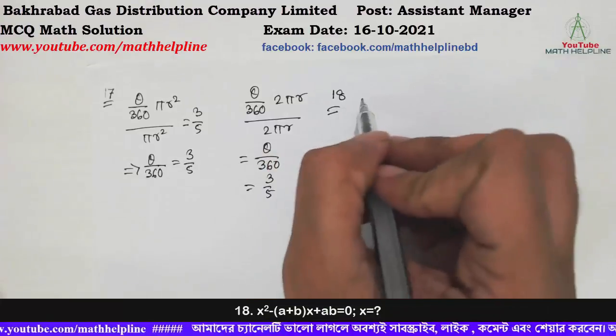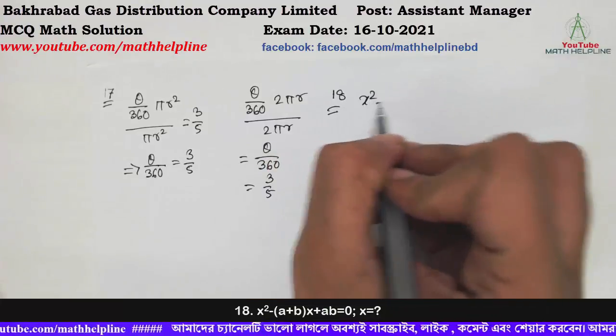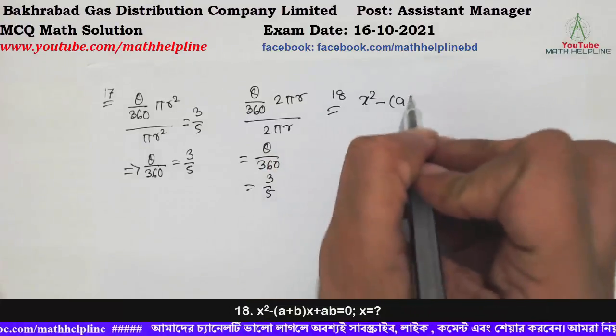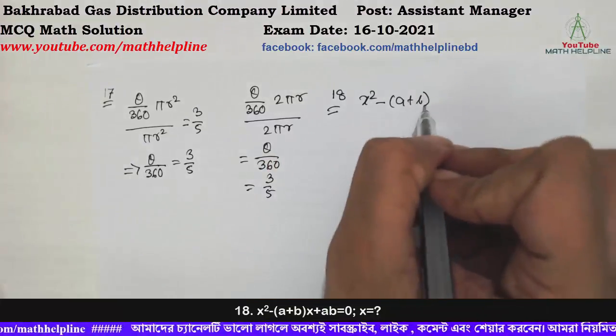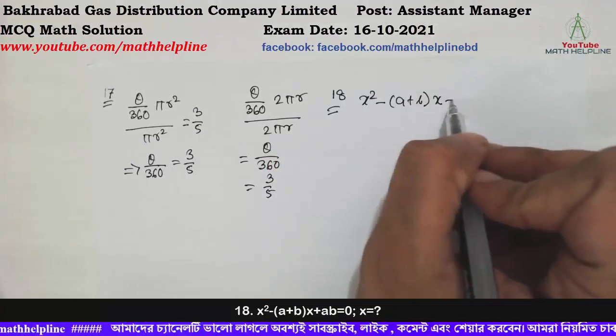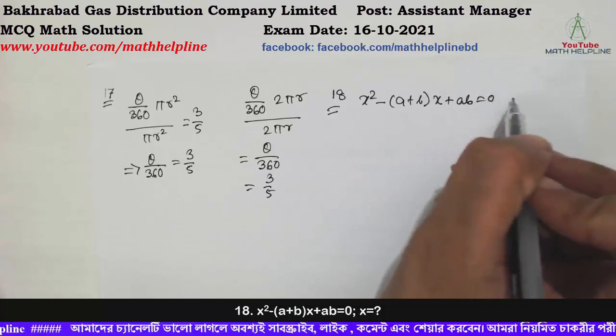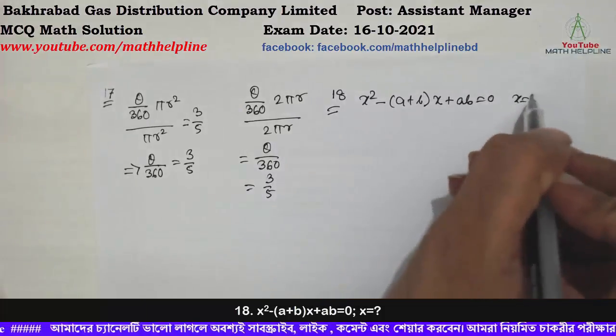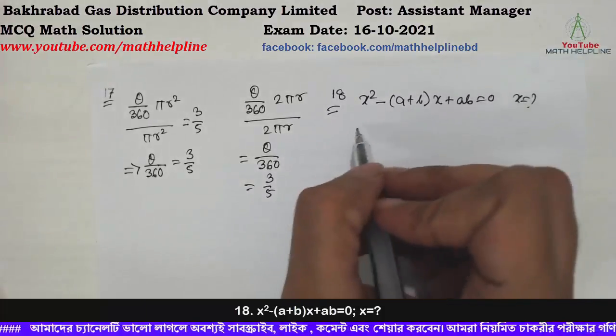x squared minus (a plus b) into x plus ab equal to 0. Solve: x is equal to what?